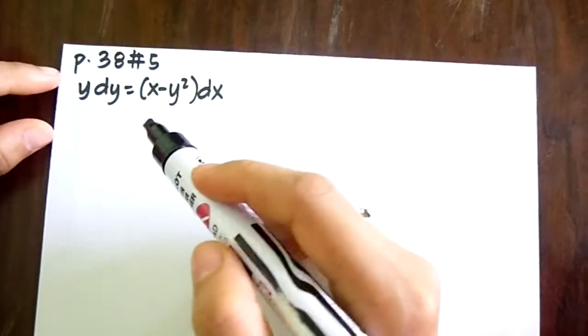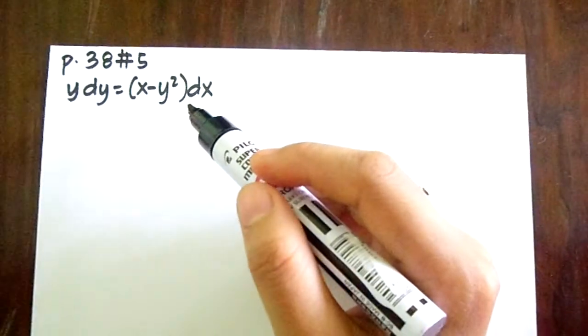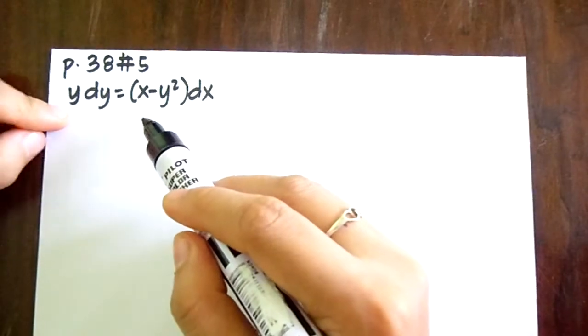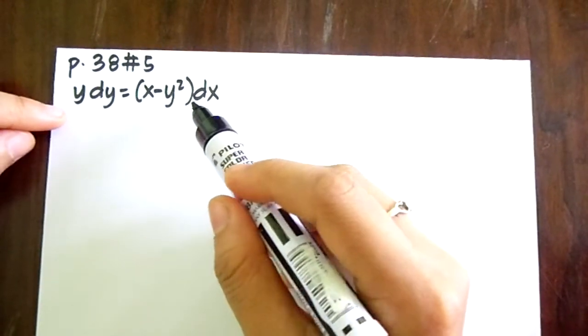Now we're going to solve page 38 number 5, which is y dy equals x minus y squared dx.